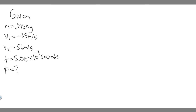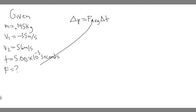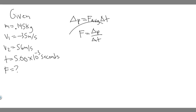So how do we solve for this? There are a few things you should know. The change in momentum — delta P — is equal to F average times delta T. I recommend you memorize this. You can also rearrange it as force equals change in momentum over change in time. Keep in mind that momentum equals mass times velocity.